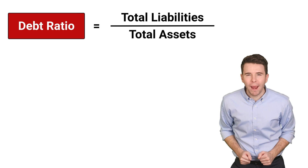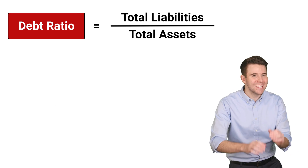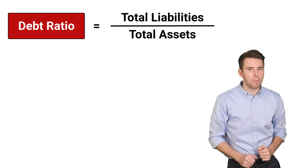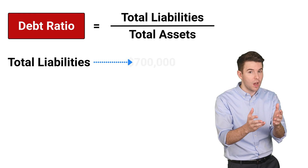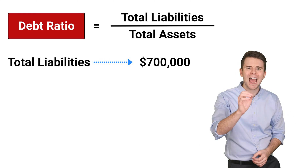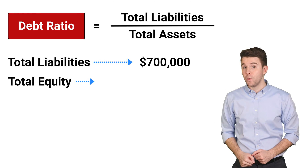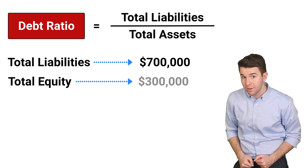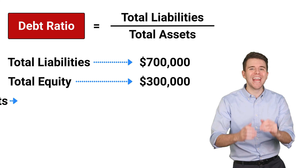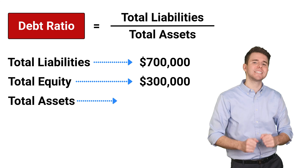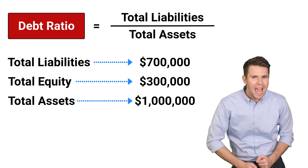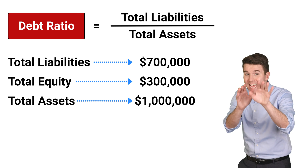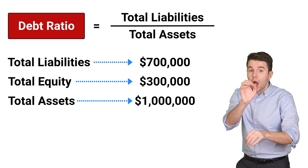To put this into practice, let's say a company reported total liabilities of $700,000, total equity of $300,000, and total assets of $1,000,000 at the end of the year.